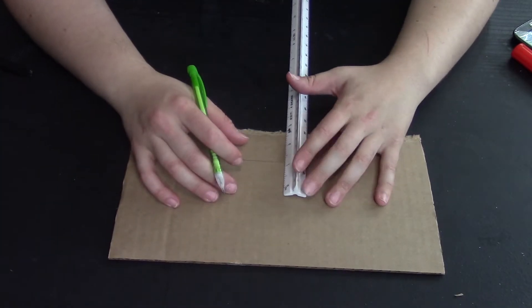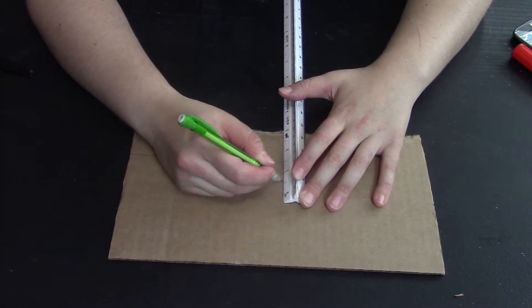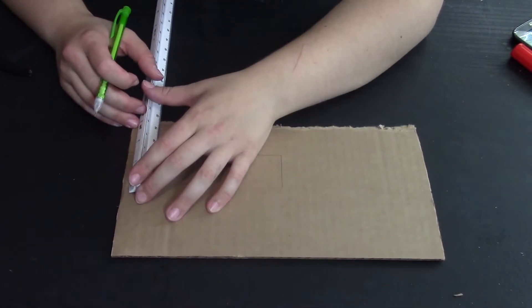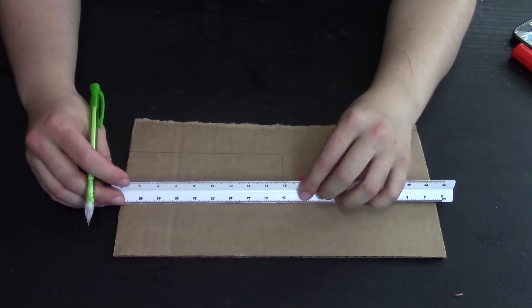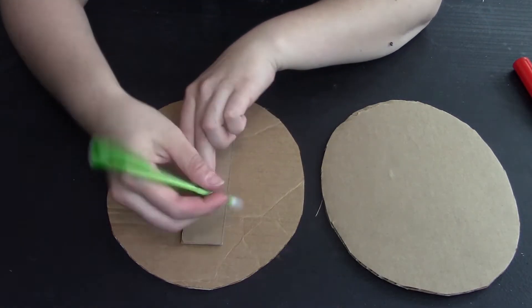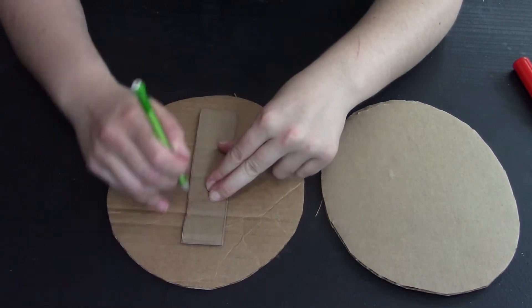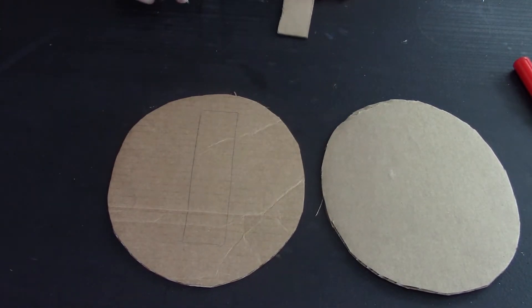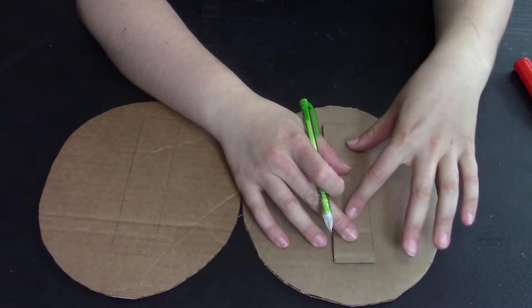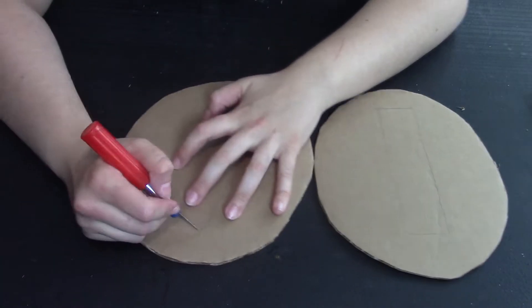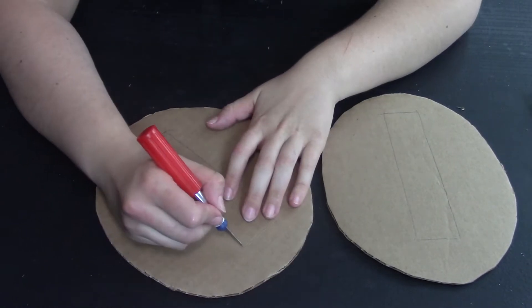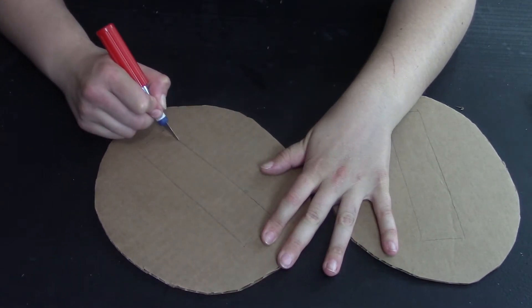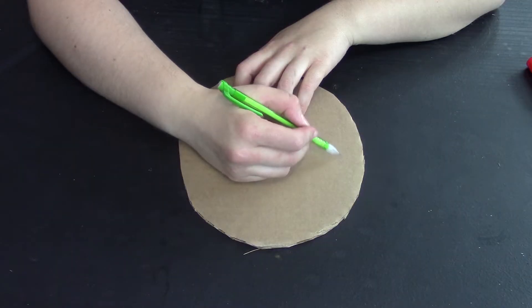I'm going to grab a spare piece of cardboard and cut out a five inch by one and a half inch piece. I'm going to use that piece as a tracing guide in the center of two of my circles. I'm going to go ahead and cut that out.